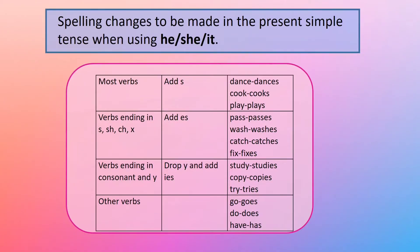Now let us look at spelling changes we need to make in the simple present tense. We only need to make these changes when using he, she, or it. With most verbs, all we need to do is add an S — for example: dance/dances, cook/cooks, play/plays. If the verb ends with S, SH, CH, or X, we add ES — for example: pass/passes, wash/washes, catch/catches, fix/fixes. For verbs ending in a consonant and Y, we drop the Y and add IES — for example: study/studies, copy/copies, try/tries.